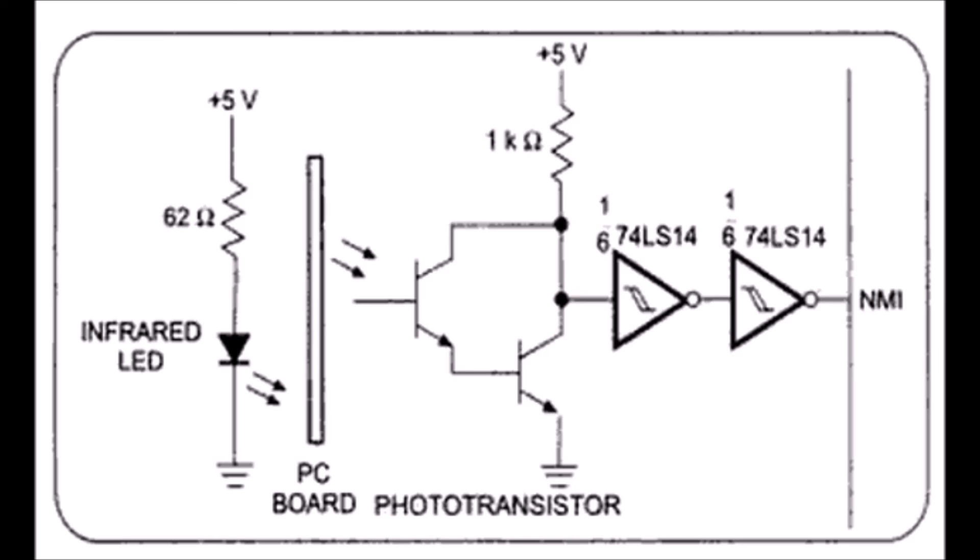To detect a board coming out of the machine, we use an infrared LED, a photoregister, and two conditioning gates, as shown on the screen. The LED is positioned over the track and the photoregister below it. When no board is between them, light from the LED strikes the photoregister and turns it on, keeping the NMI input on the 8086 low. When a board passes between them, light doesn't reach the photoregister, turning it off, causing the NMI input to go high. When the 8086 receives this low to high signal on its NMI input, it automatically does a Type 2 interrupt response.